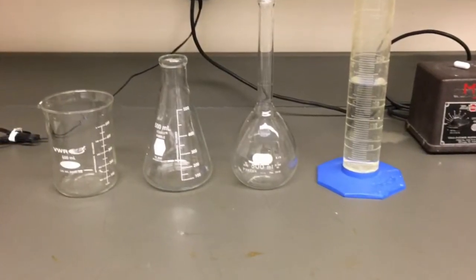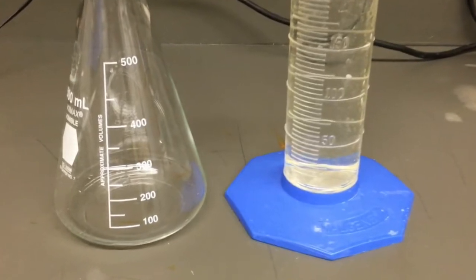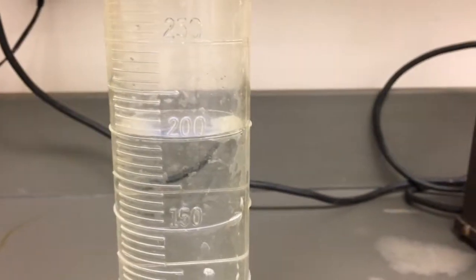When preparing general growth media, utilize an Erlenmeyer flask as it is easily autoclavable and has a narrow opening reducing the chances of spilling which might occur with a wide-mouth beaker.